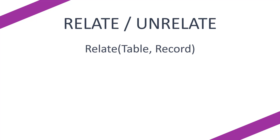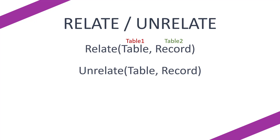Well, there are two functions: Relate and Unrelate. For the Relate function, you write Relate, open your parentheses, put the initial table, then put the record you're trying to relate to that table. So essentially we have table one and table two and this is creating a relationship between both of them. To do an Unrelate — to remove the relationship — you use Unrelate and do exactly the same thing: write Unrelate, open the parentheses, put your table, then your record, and close the parentheses.